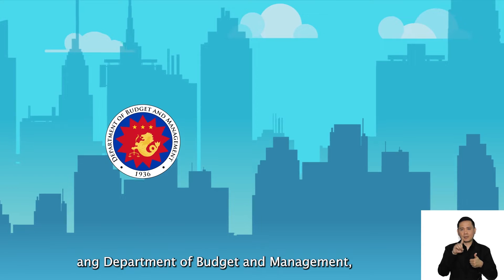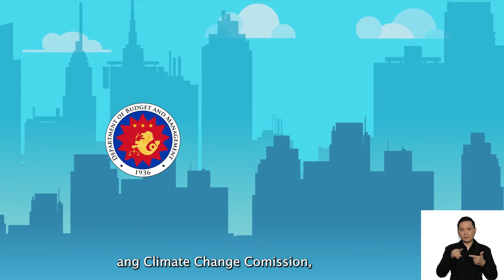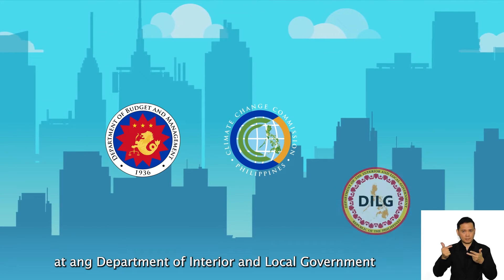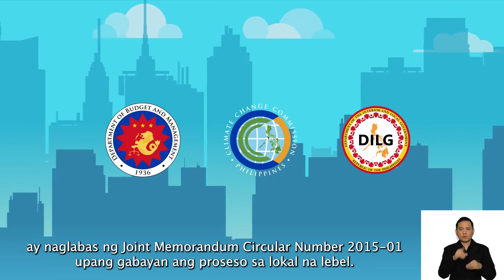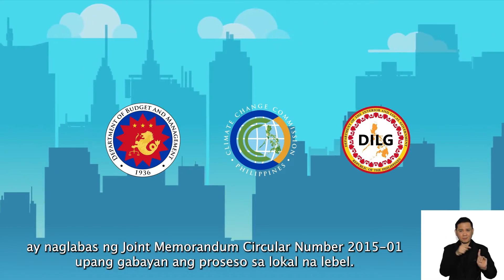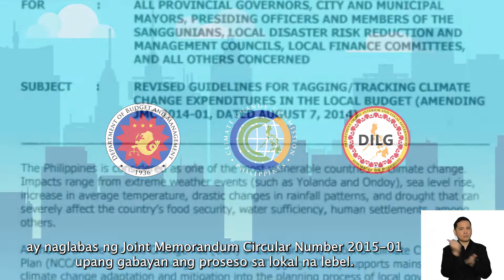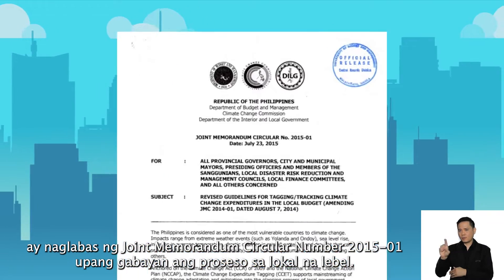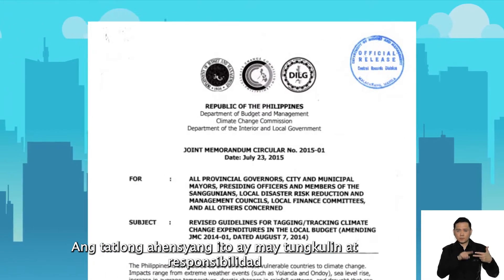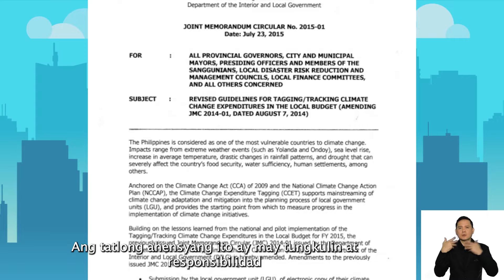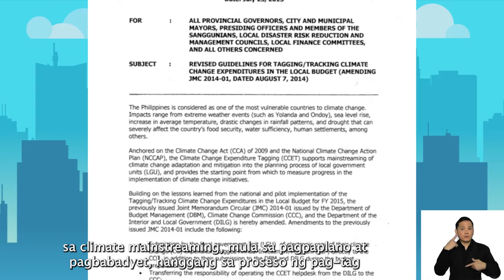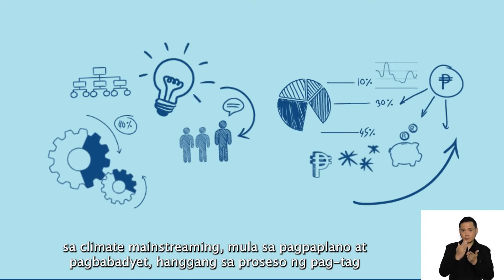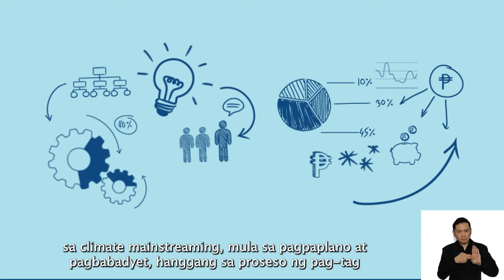The Department of Budget and Management, the Climate Change Commission, and the Department of the Interior and Local Government institutionalized CCE-T through Joint Memorandum Circular No. 2015-01. These three agencies have big roles and responsibilities in the climate mainstreaming process, from planning and budgeting to the tagging process.